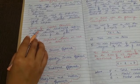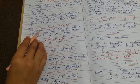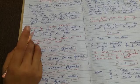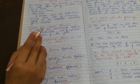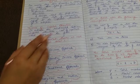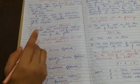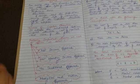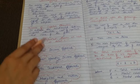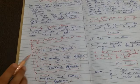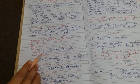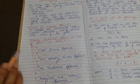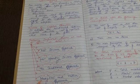Coming to the main topic: theories of capital structure. These theories have been given by different authors and study the relationship between capital structure, cost of capital, and value of the firm — these three parameters. The theories we have to study are: first, the Net Income approach; second, the Net Operating Income approach; third, the Traditional approach; and fourth, the Modigliani and Miller approach.